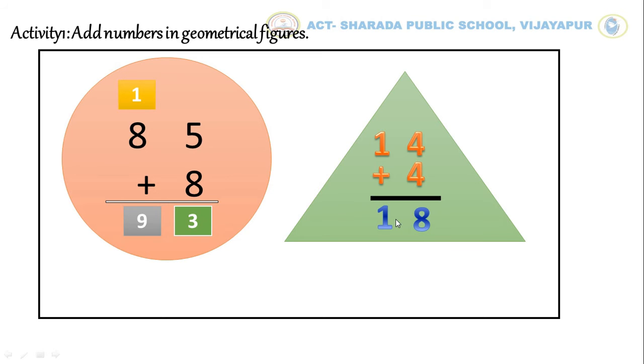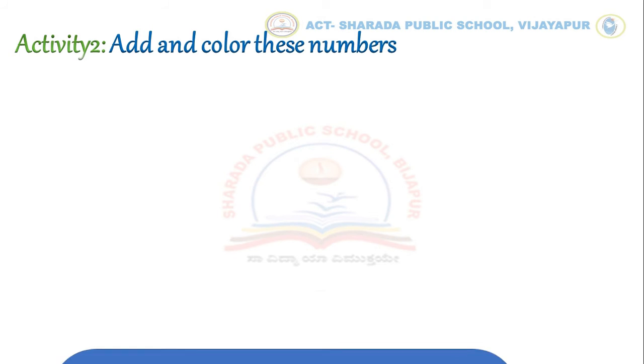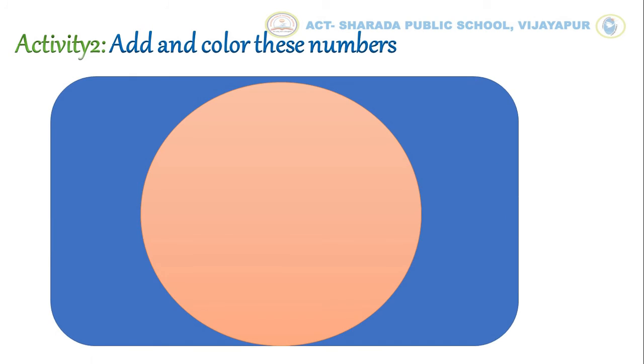Now next, we will move towards activity 2: add and color these numbers. Let's start the activity. Here we have a circle. In this circle there are 4 equal parts. In the first part, we have to add these numbers.